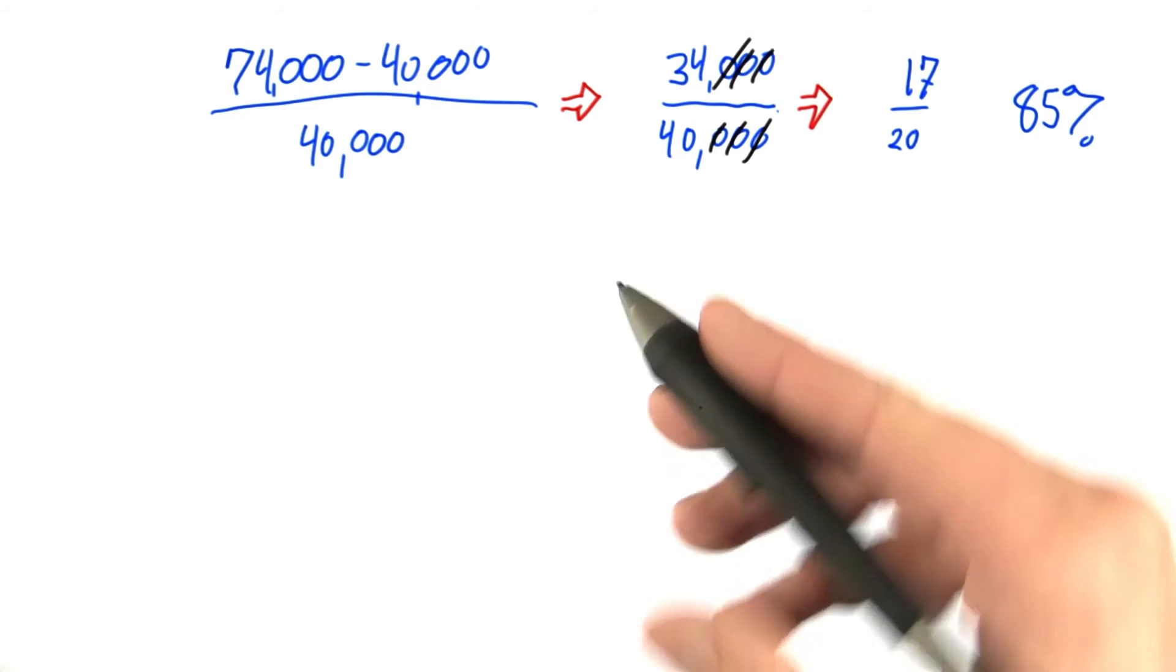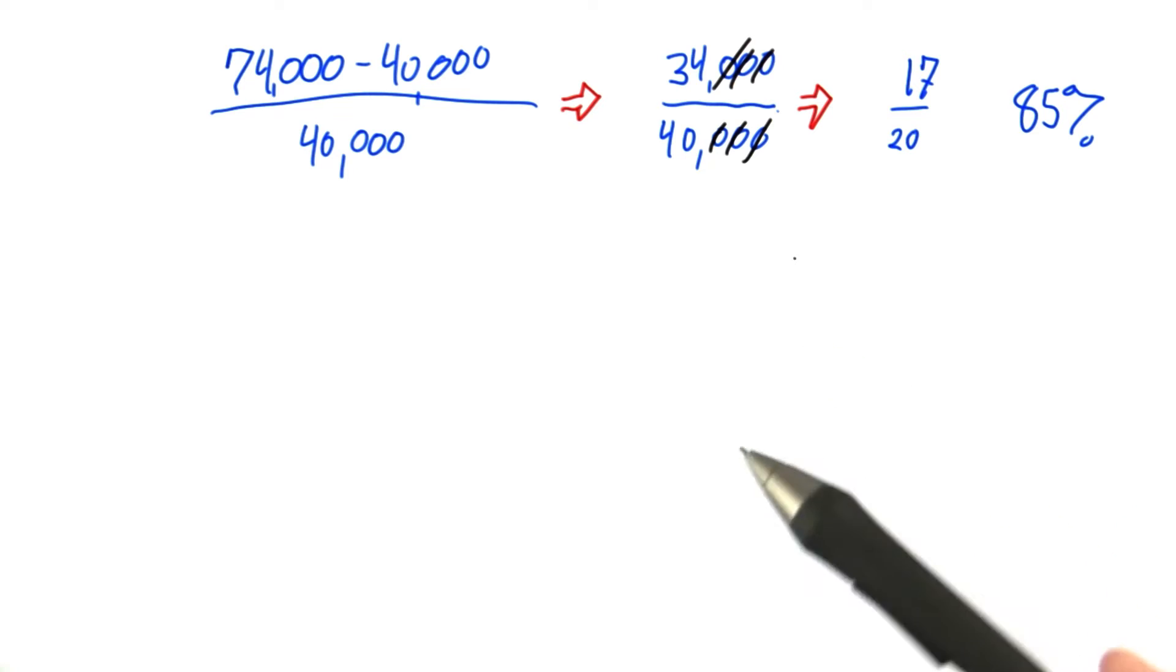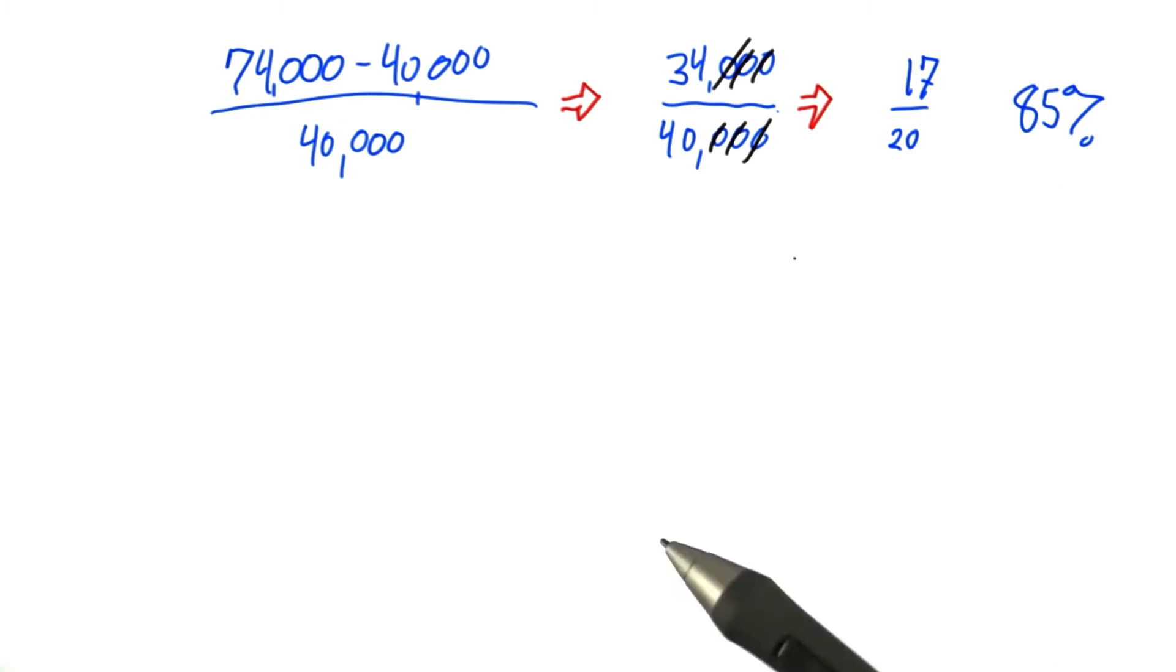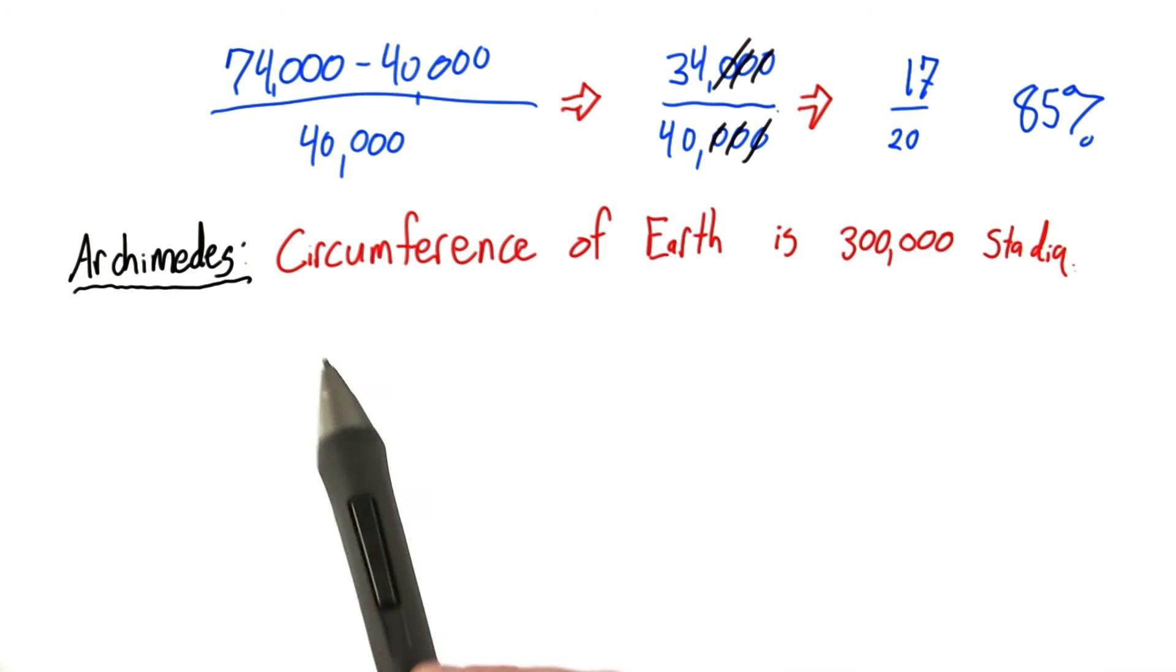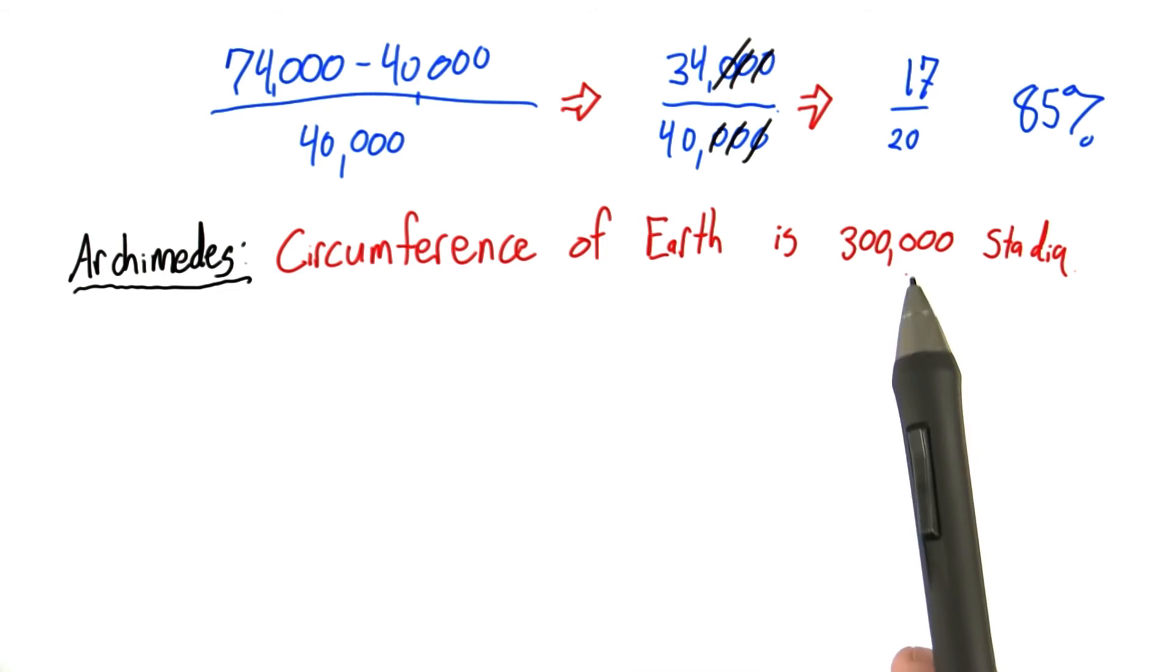Now, Plato wasn't the only person to make a guess about the circumference of the Earth. After Plato, another famous and brilliant thinker made a guess at the circumference of the Earth, and that was Archimedes. Archimedes guessed that the Earth had a circumference of 300,000 stadia.